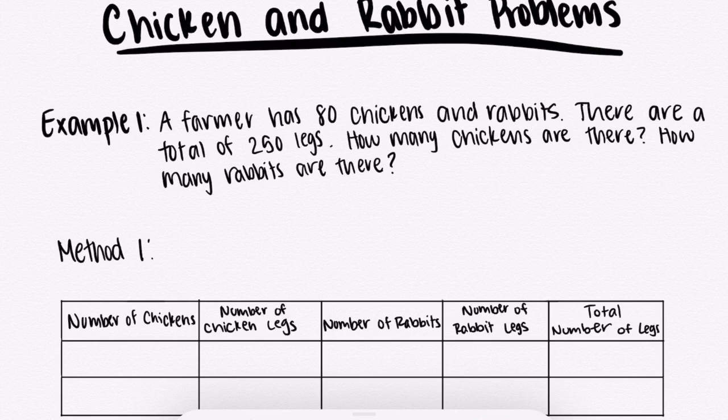Example 1: A farmer has 80 chickens and rabbits. There are a total of 250 legs. How many chickens are there? How many rabbits are there?